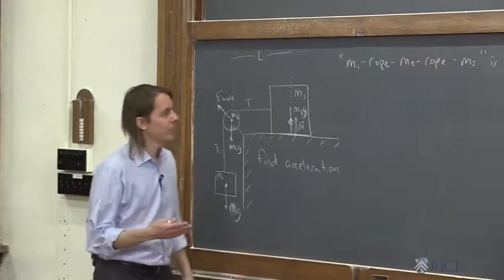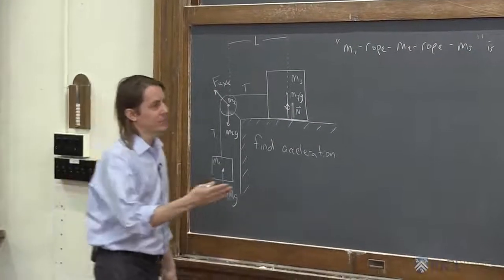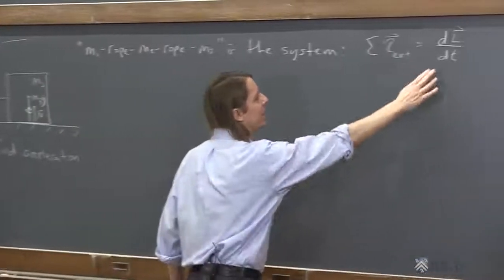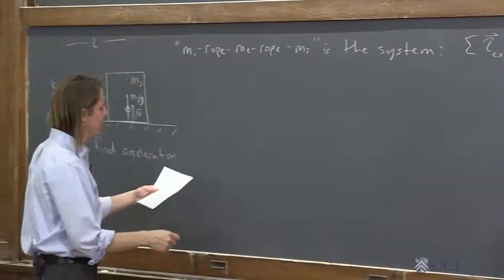So now we have the sum of the external torques. Now let's look at the other side of the equation. Let's look at the time rate of change of the angular momentum.